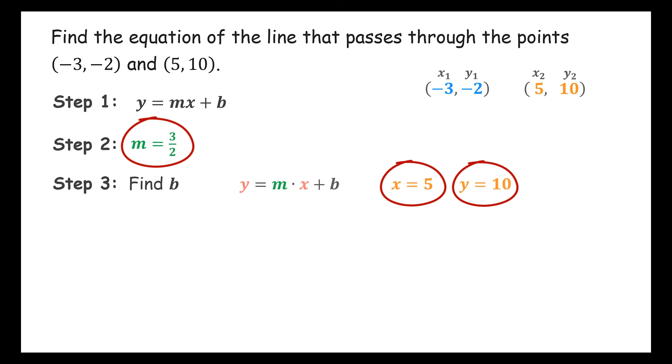Next, we make the substitutions to get 10 equals 3 halves times 5 plus b. But before we can solve this equation for b, we must simplify the right side by performing the multiplication. Since 3 halves times 5 is 15 halves, we get 10 equals 15 halves plus b.